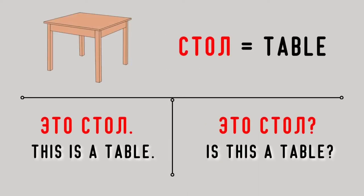Стол — table. Это стол. This is a table. Это стол?